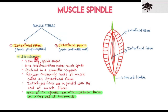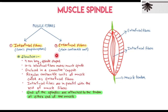The structure of the muscle spindle: these are 4mm long, spindle-shaped structures. Ten to twelve intrafusal fibers make up the muscle spindle, and these are enclosed in connective tissue capsules. The regular contractile units of the muscle are called extrafusal fibers.